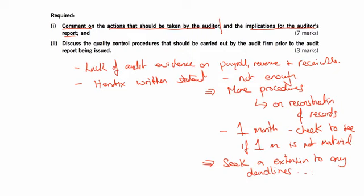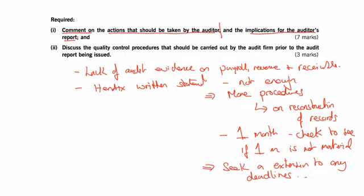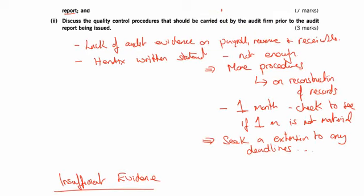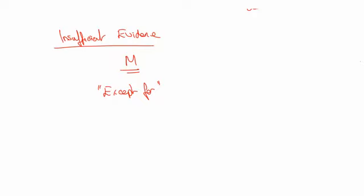They would likely go along with an extension because they don't want a modified opinion. So that's that. The other part asks: what about the implications for the audit report? We have insufficient evidence. If it's material, we give an except for opinion — so, except for payroll, receivables, and revenue, everything else seems to be okay. So, an except for paragraph.